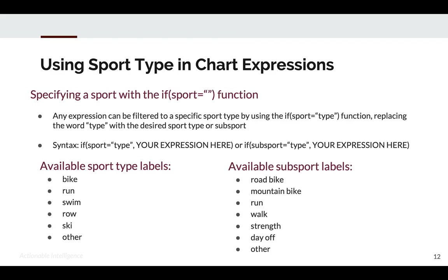To build charts with expressions other than data channels from workout files, you can use the 'if sport' function. This can be used with pretty much any expression. You simply type: if(sport == "sport name", your expression). The available sport type labels you can use are: bike, run, swim, row, ski, and other.